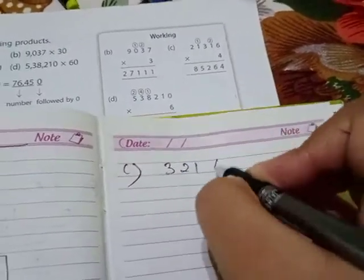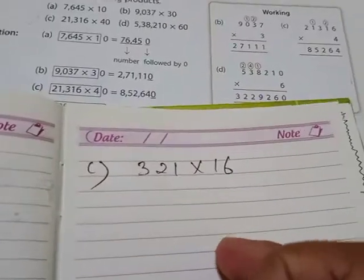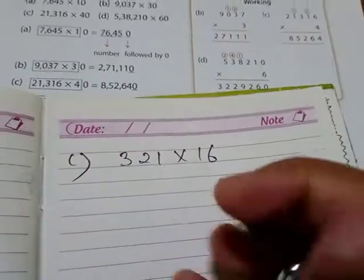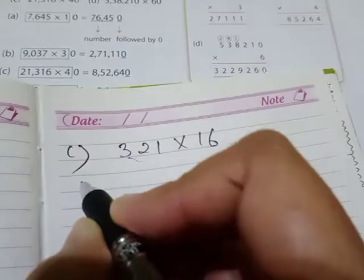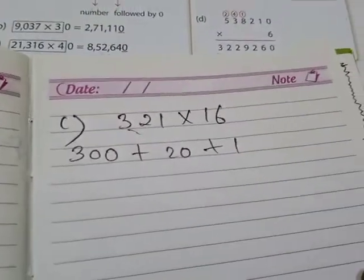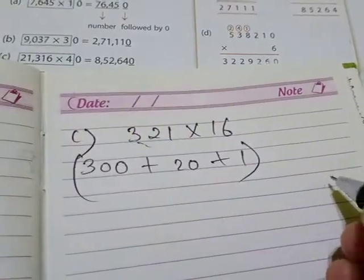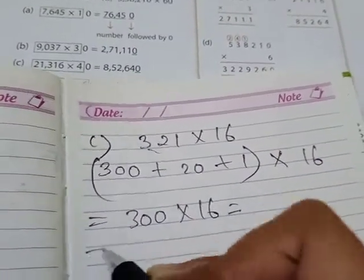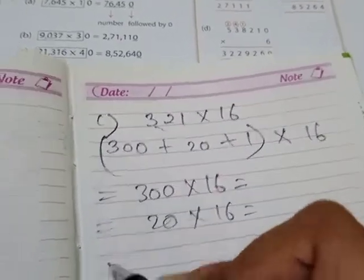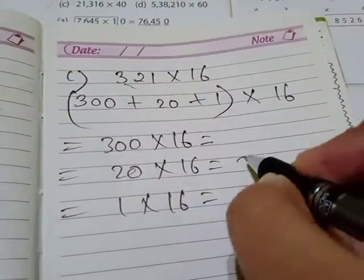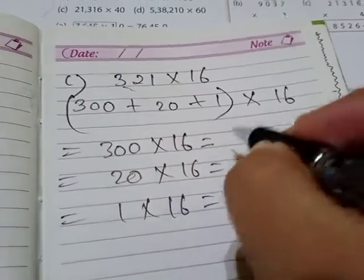Question 1c: 321 into 16. We solve it with the multiplication table method — not simple multiplication. We expand 321 as 300 plus 20 plus 1. All three numbers have to be multiplied with 16: 300 into 16, then 20 into 16, then 1 into 16. So: 16 ones are 16, 16 twos are 32 with a zero, 16 threes are 48.